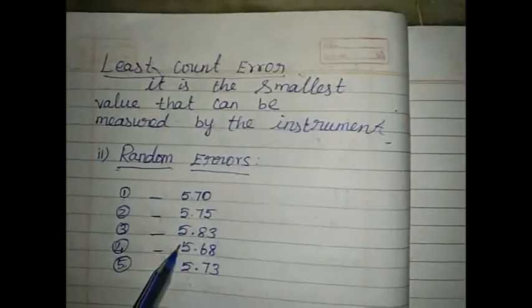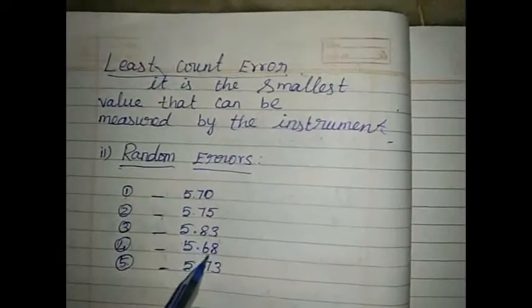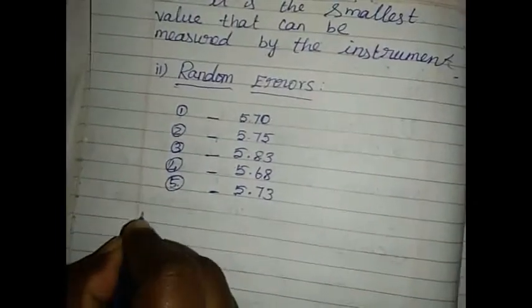So here, the pitch scale readings are all 5. But the head scale coincidence, in that small variations are there. In this case, we can take mean value.